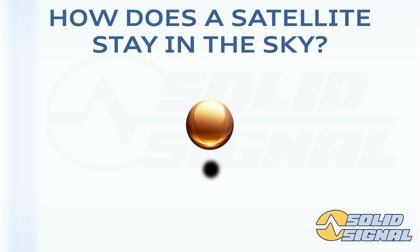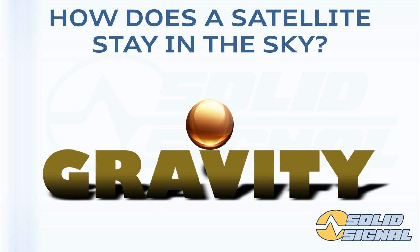If you're asking how a satellite stays in the sky, it's an excellent question. After all, most things don't just hover over a fixed point in space. There is some math to it, and it actually does work. Let's start with gravity. The further away you get from the center of the Earth, the less gravity affects you. So if you get something up high enough, it's not going to fall as fast.